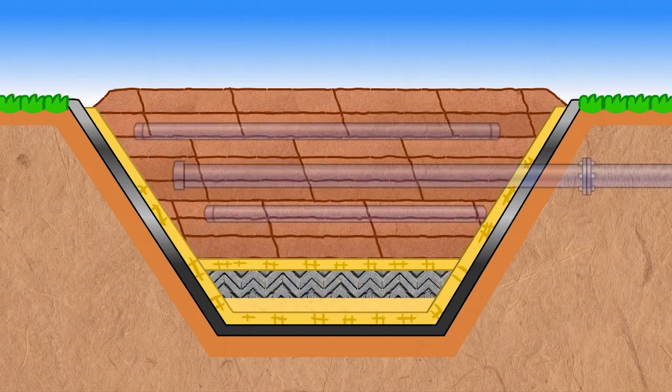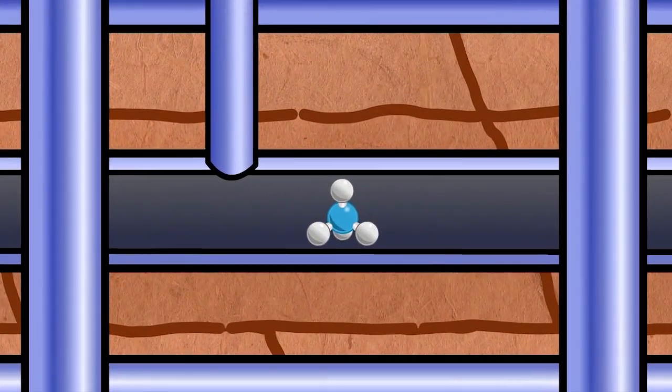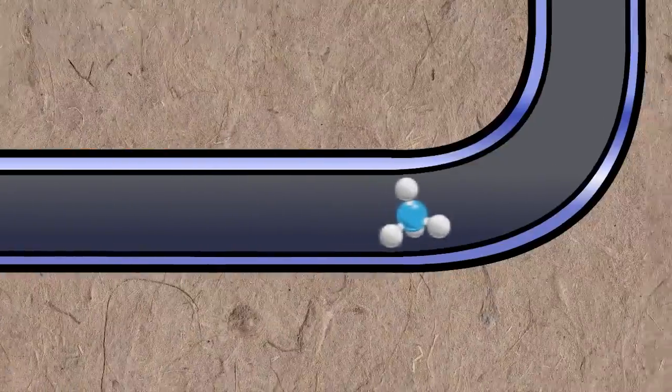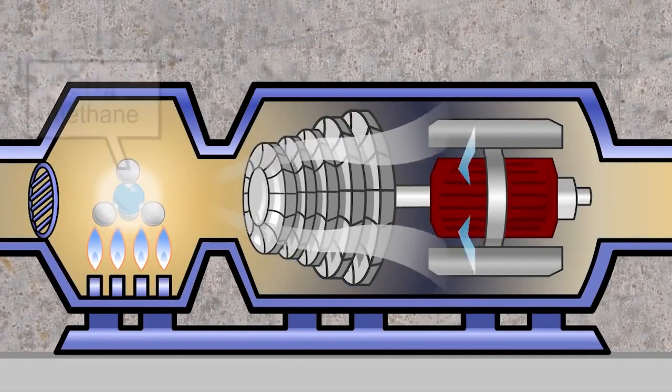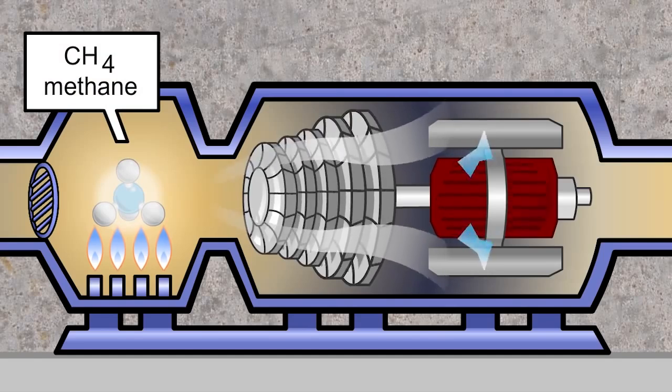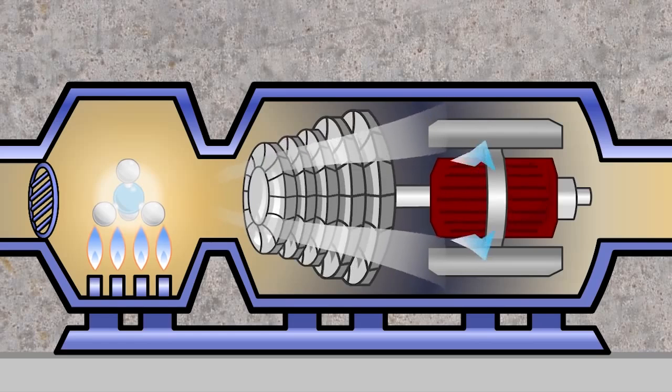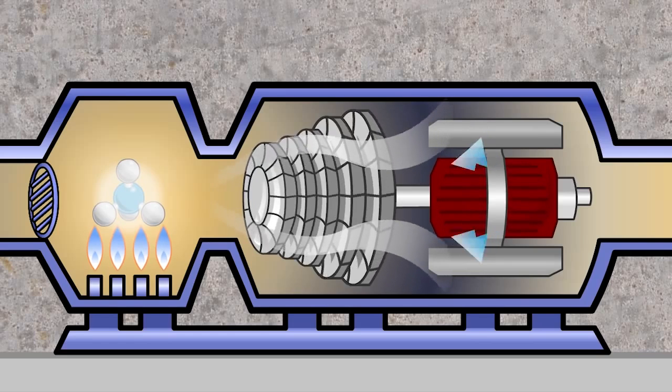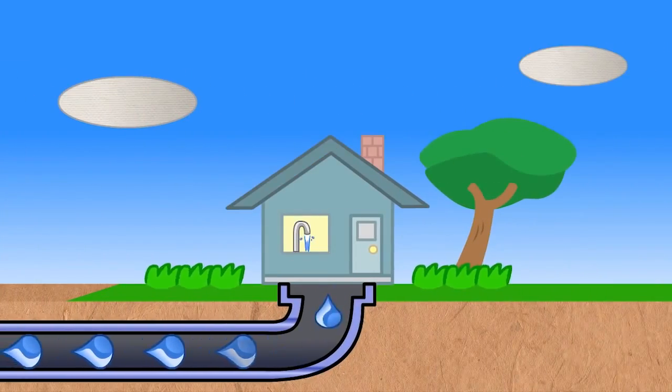The landfill gas created from decomposing waste is collected through wells and piping systems that are constructed into each cell. The gas captured in these pipes is approximately 55% methane gas. Once collected, it is pumped to a generating station where all water is removed and the gas is burned. It is then drawn to the generator building where the gas is turned into electricity. We now use our own self-produced electricity to power both our water and wastewater treatment plant facilities.